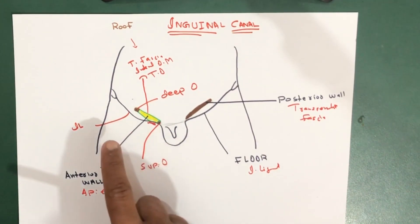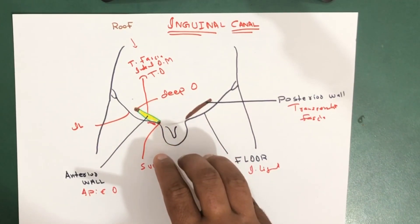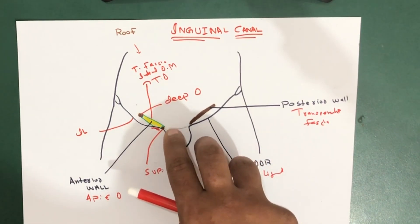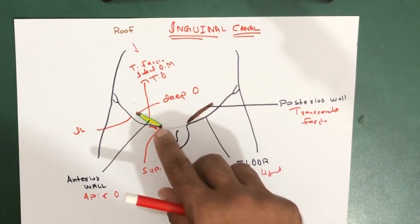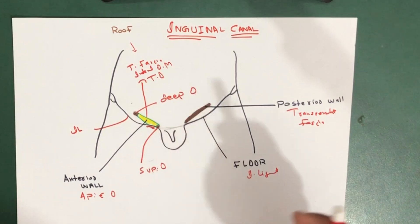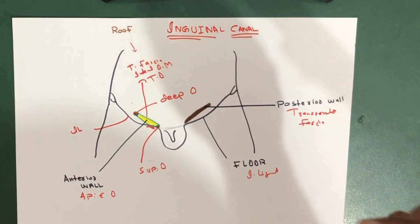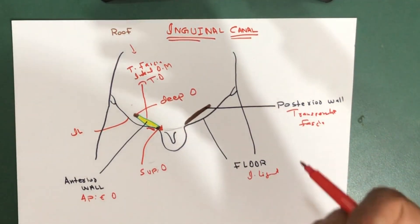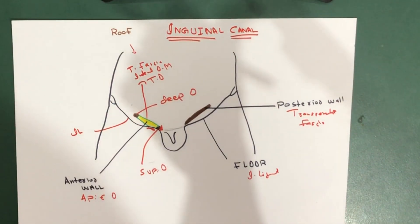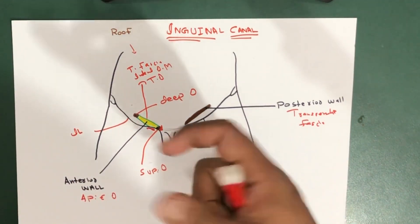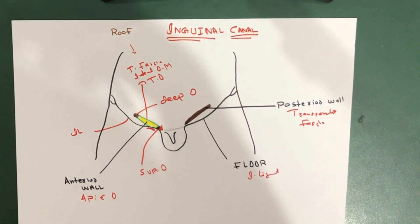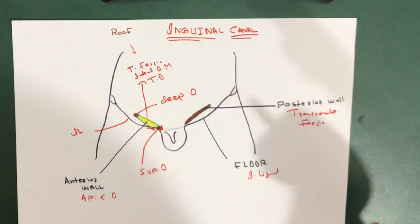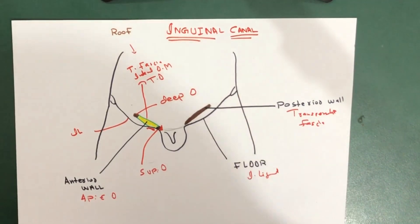The superficial or external ring marks the end of the inguinal canal, lying near the pubic tubercle. It is triangular in shape and is formed by the aponeurosis of the external oblique muscle. That covers the openings — or rings — of the inguinal canal.